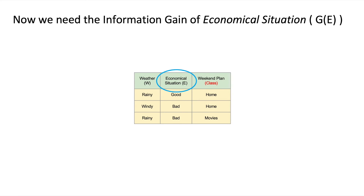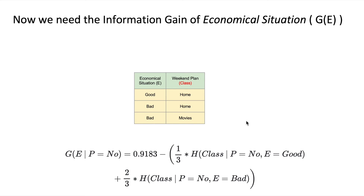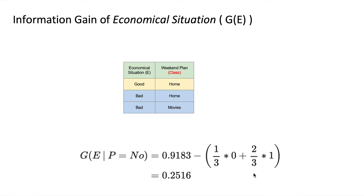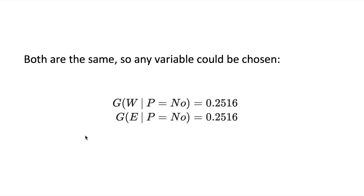For economical situation with live with parents equal to no: when economical situation is good we have one row with 100% in one class, so entropy is zero. When economical situation is bad, we have 50% in each class, so entropy is one (maximum). Using the respective proportions from the number of rows, we obtain the information gain for economical situation.